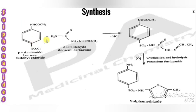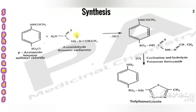Now we'll see the synthesis of sulfamethizole. The starting materials are para-acetamidobenzenesulfonamide chloride and acetaldehyde thiosemicarbazone. CH3CONH2 is acetamide, and with SO2Cl it becomes benzenesulfonamide chloride. Adding acetamide at the para position gives para-acetamidobenzenesulfonamide chloride. Semicarbazide is NH2-CO-NH-NH2; replacing oxygen with sulfur gives thiosemicarbazide.